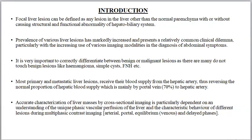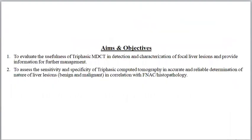Accurate characterization of liver masses by cross-sectional imaging is particularly dependent on an understanding of the unique phasic vascular perfusion of the liver and the characteristic behavior of different lesions during multiphasic contrast imaging, i.e., arterial, portal, equilibrium, and delayed phases. The aims and objectives of this study were to evaluate the usefulness of triphasic MDCT in the detection and characterization of focal liver lesions, and to assess the sensitivity and specificity of triphasic CT in accurate determination of the nature of liver lesions in correlation with FNAC or histopathology.